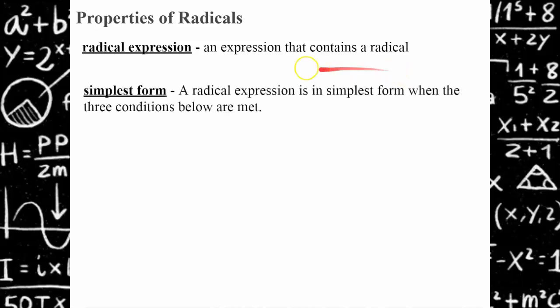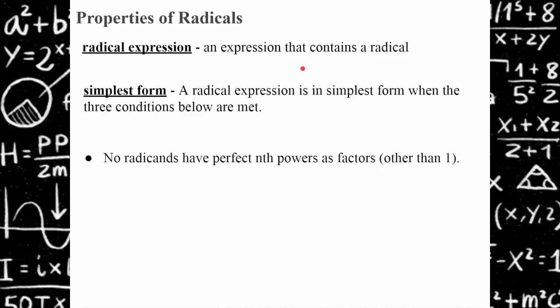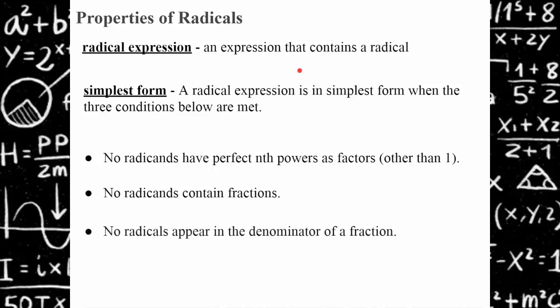The simplest form of a radical expression is when three conditions are met. No radicands can have perfect nth powers as factors other than one. No radicands can contain fractions. And no radicals can appear in the denominator of a fraction.